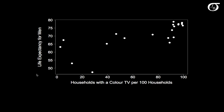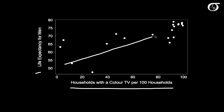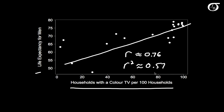In this next example I've plotted life expectancy for men versus the number of households with a color TV per 100 households for a sample of 20 countries. There does appear to be some sort of increasing trend, though it certainly doesn't look perfectly linear. If we were to force a line through those points, the correlation coefficient is approximately 0.76, and the coefficient of determination is approximately 0.57 — telling us that 57% of the variability in life expectancy can be attributed to the linear relationship with households with a color TV.